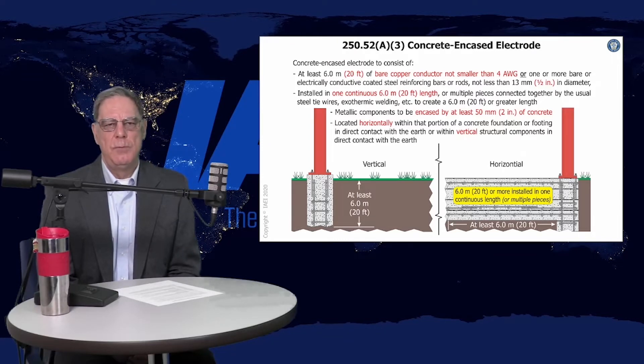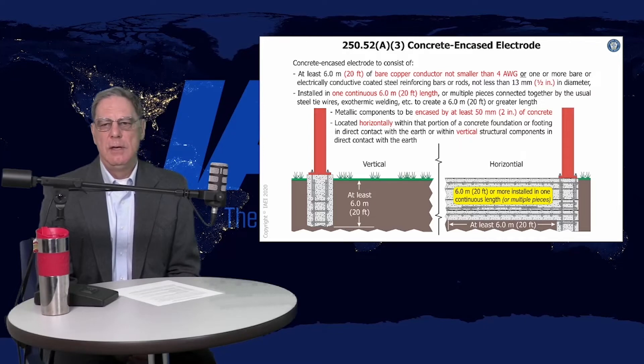The other thing about the rebar is if it's epoxy-coated rebar, that is not conductive. If it's galvanized or bare, then it's perfectly fine in the concrete encasement. The concrete encasement needs to be at least two inches on all sides and can be located horizontally or vertically, so 20 feet horizontally or 20 feet vertically in the concrete.